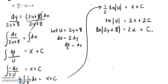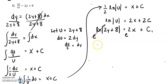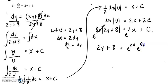Now step four: to get rid of an ln, we have to do essentially the opposite, which is exponentiate. So I'm going to exponentiate both sides. e to the ln essentially cancels out the ln, so that becomes 2y plus 8 equals e to the 2x times e to the c1.